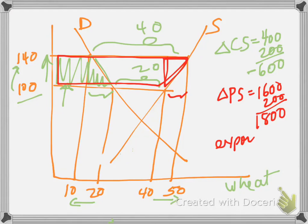Remember that the government is paying the producers that extra money. So exports are 40, and the subsidy is 40, so that's 1,600. That's a loss.